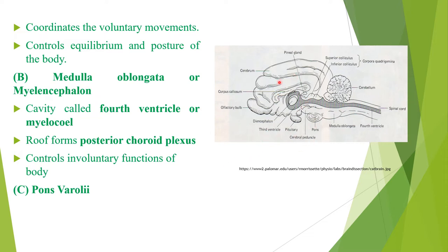In this diagram you can see the cerebrum, olfactory bulb, cerebellum, medulla oblongata having the fourth ventricle, and the spinal cord. The pons varolii are thick bands of transverse nerve fibers present at the floor of the upper part of the medulla oblongata. Their function is to coordinate the two cerebellar hemispheres and connect the medulla with the higher centers of the cerebellum.